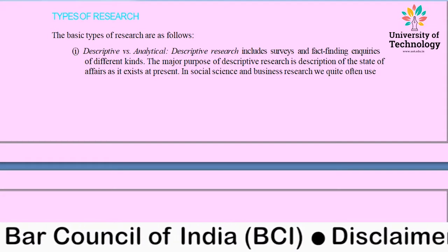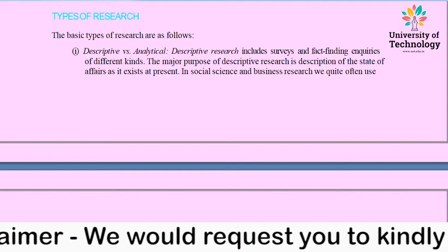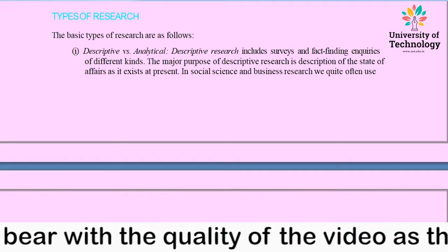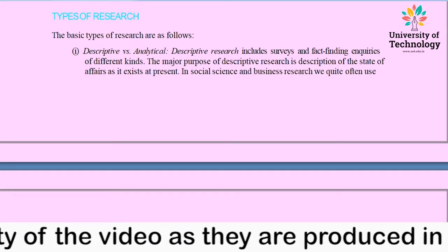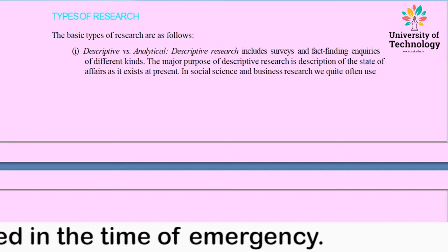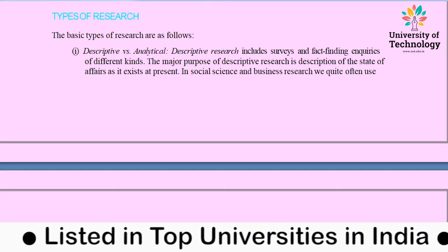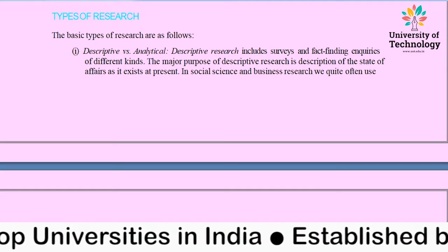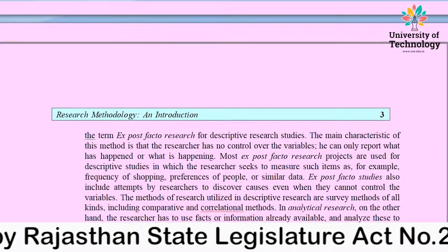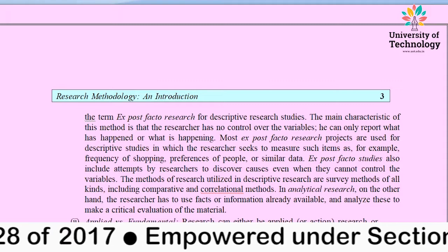What is exactly descriptive research? In descriptive research, various surveys, facts, and finding inquiries of different kinds can be conducted. The major purpose behind descriptive research is the description and detailing of the state of affairs as it exists at present — what are the various descriptive features of the existing event. It is basically conducted in social science and business research. It is also conducted as ex post facto research for a descriptive research study.